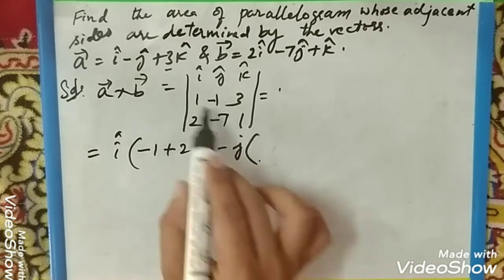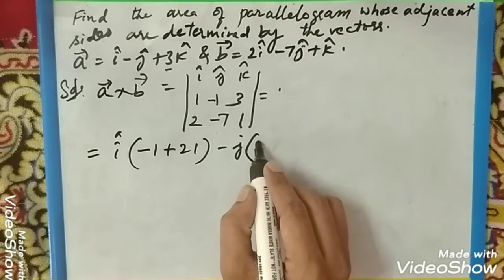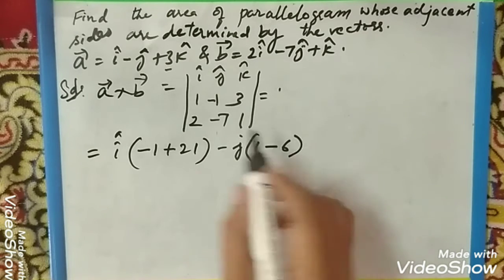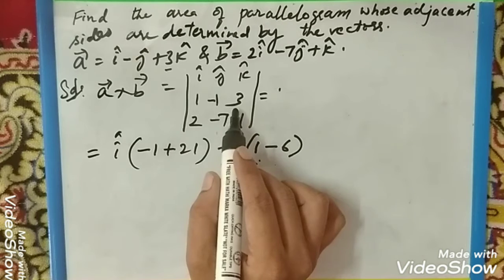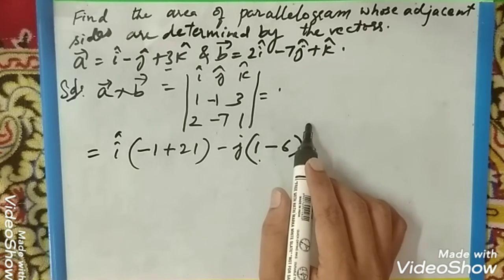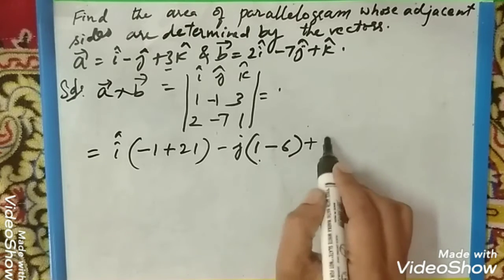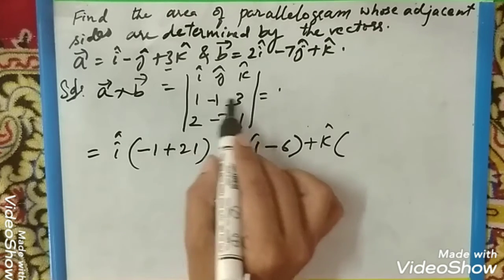You have to take j. 1, 1 is 1 and 2, 3... 1 into 1 is 1, minus 2 into 3 is 6, so 1 - 6 is -5.